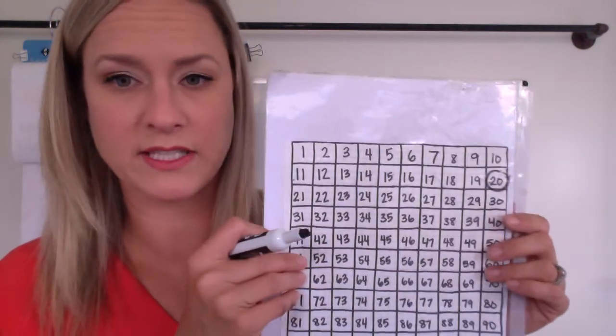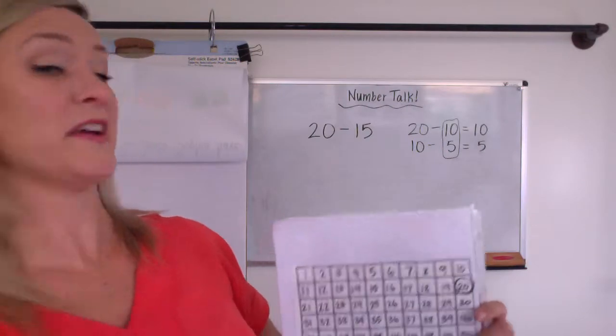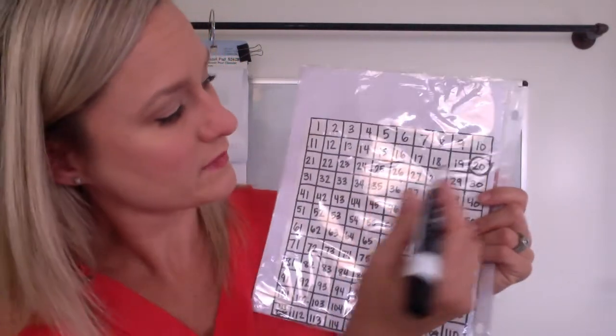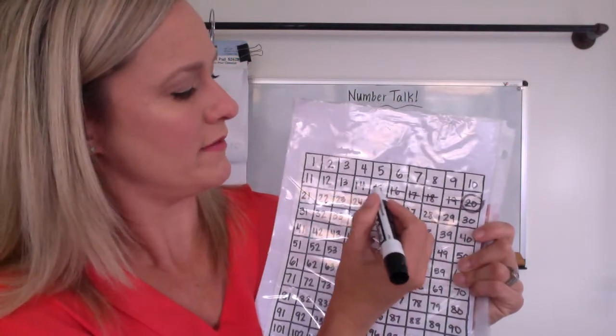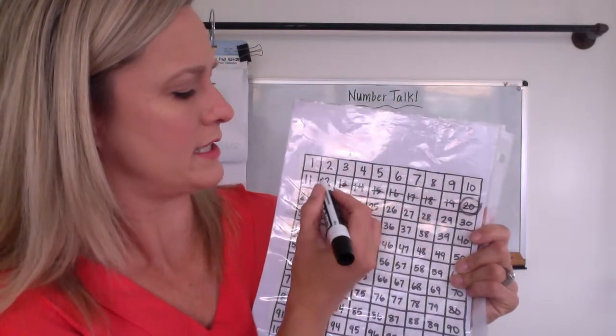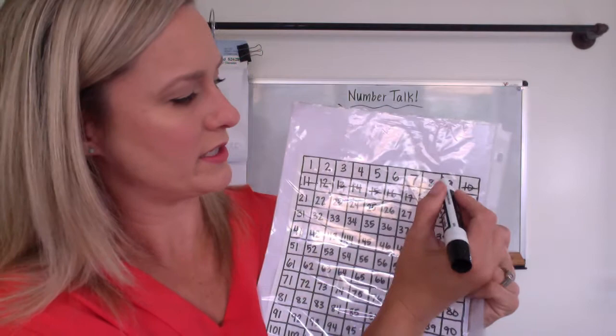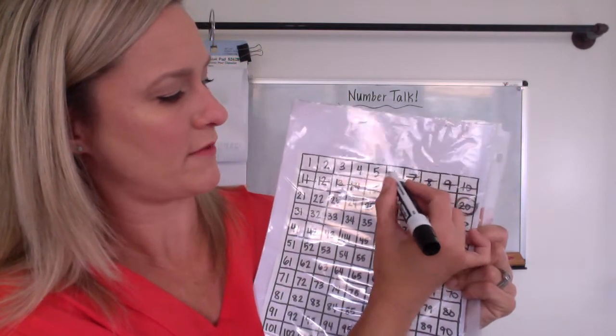Okay, so starting at 20, we have to take off how many? 15. Okay, ready? One, two, three, four, five, six, seven, eight, nine, 10, 11, 12, 13, 14, 15.